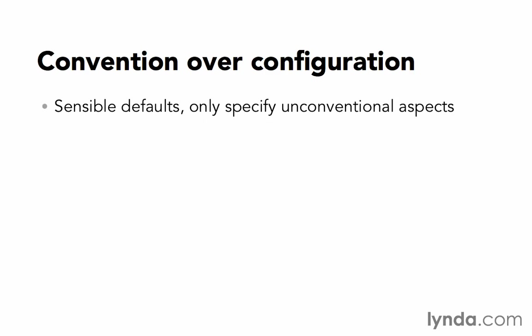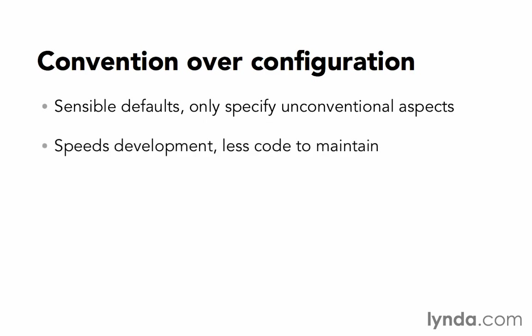That means we only need to specify the unconventional aspects — the things that are different for our code. That speeds up development a lot, because most of the time we can ride on those defaults to get most of the way there.